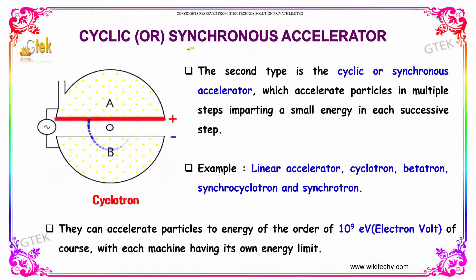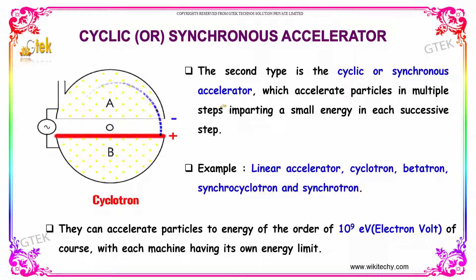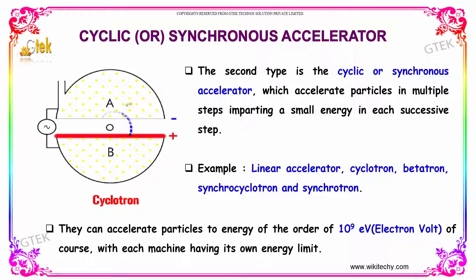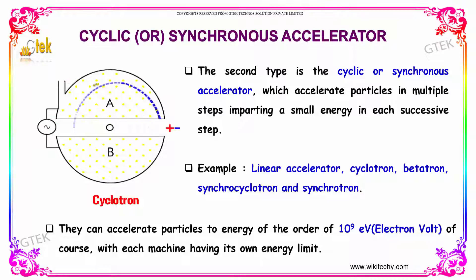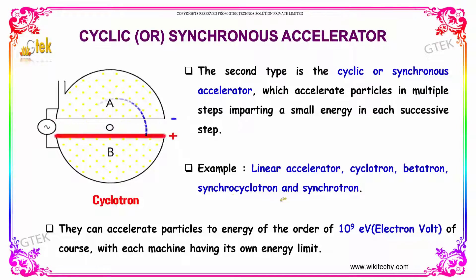The second type is the cyclic or synchronous accelerator, which accelerates the particle in multiple steps, imparting a small energy in each successive step. The typical examples are the linear accelerator, cyclotron, betatron, synchro cyclotron, and synchrotron. Here is a typical example — the cyclotron.